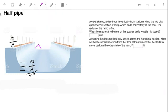I'm just going to use the shortcut here. If an object falls through a height h and doesn't lose energy in any other form, then we can simply say that v equals the square root of 2gh. The radius of the ramp is 9 meters.